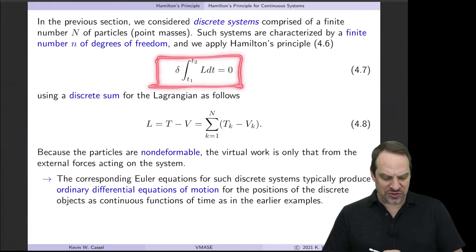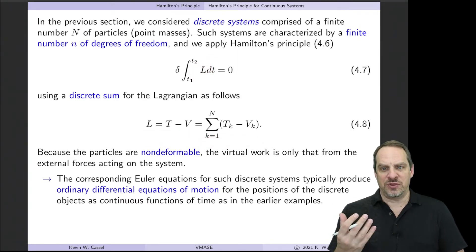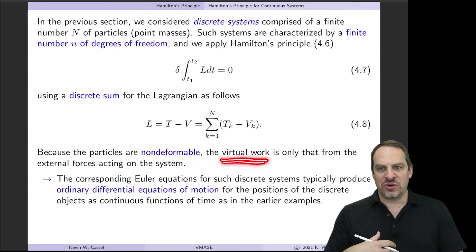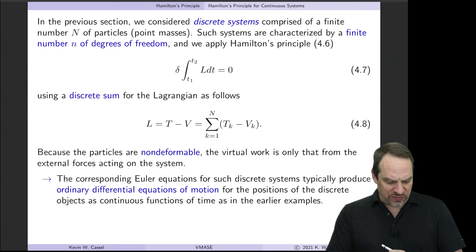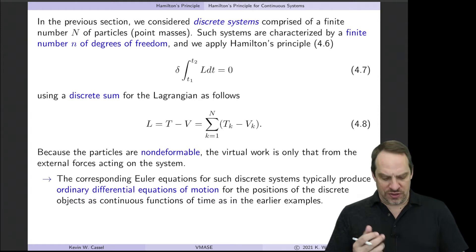And Hamilton's principle, then, for a conservative system looks like this. The variation of the integral of L, Lagrangian, is equal to zero. And then when we develop the Lagrangian, which is T minus V, we do that in terms of a discrete sum. So we sum up the Ts and the Vs, the kinetic and potential energies, of each of the pieces, each of the particles that comprise the system. And because the particles are rigid, and therefore non-deformable, the virtual work, the force acting through a distance, is only for external forces acting on the system. They typically result in ordinary differential equations of motion for the positions, angles, locations, particles in the system.